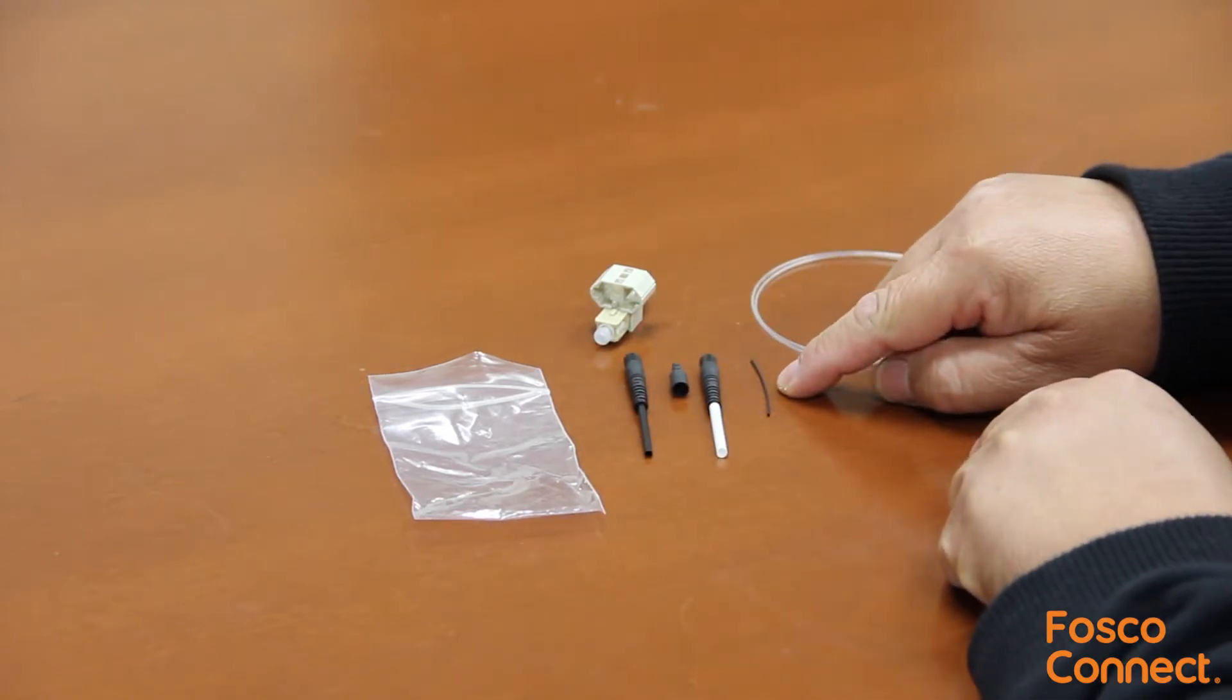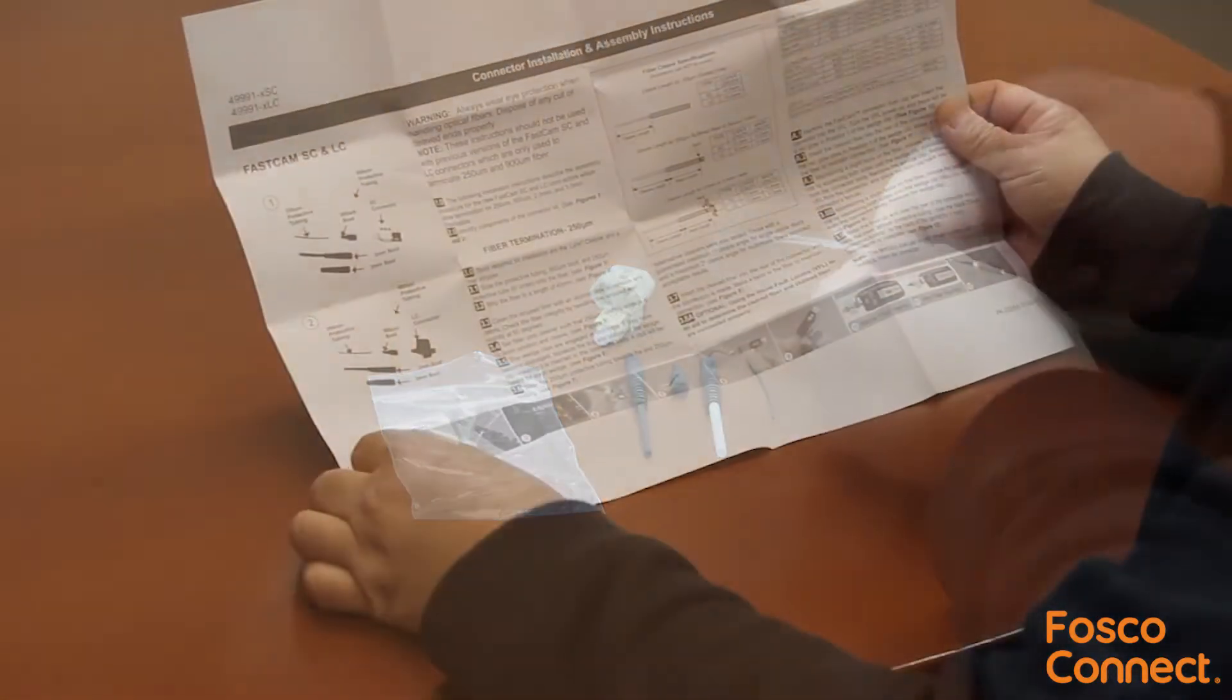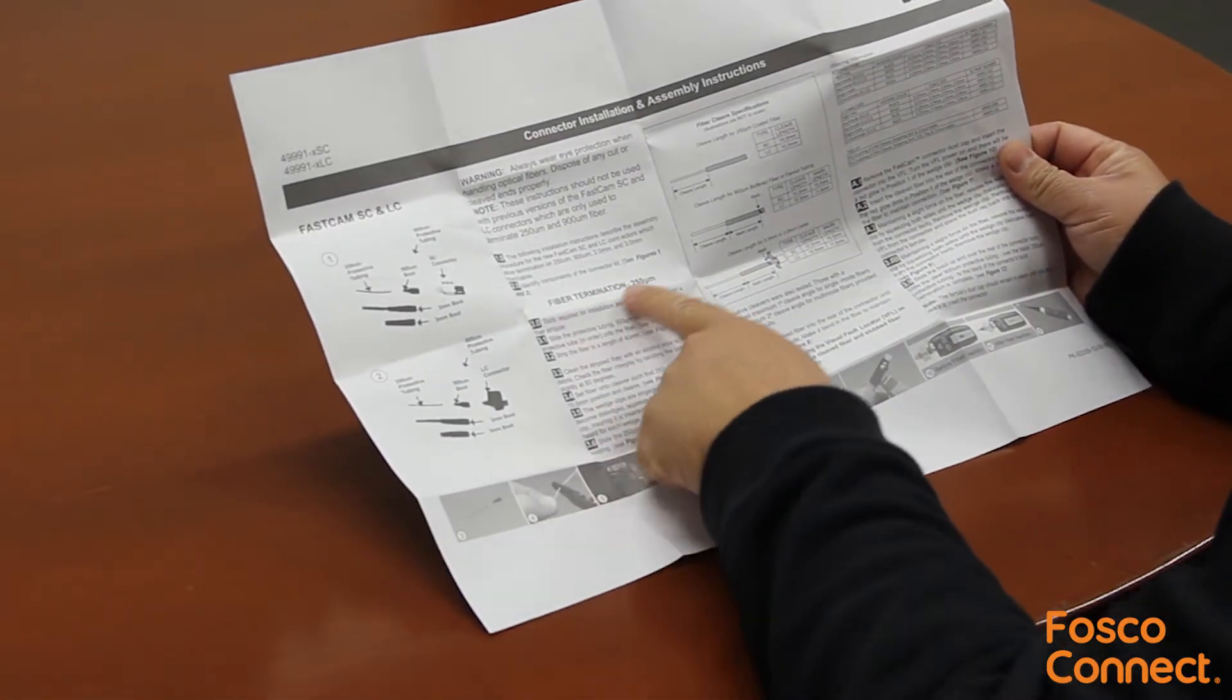An instruction sheet is included. It includes instructions for 250 micron fibers and 900 micron fibers. Lastly, there is an instruction for 2mm and 3mm jacket fiber.